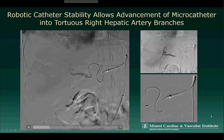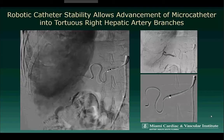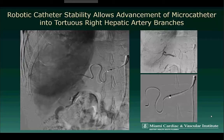In this case, with utilization of the robotic catheter, the microcatheter was able to be advanced into the inferior branch through significant tortuosity of the hepatic artery. An angiogram was performed, and subsequent chemoembolization was performed via this branch.